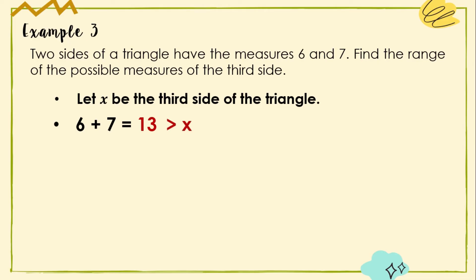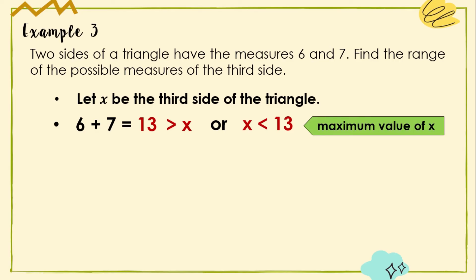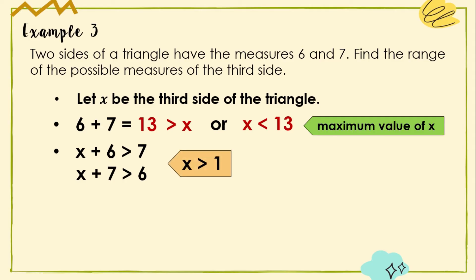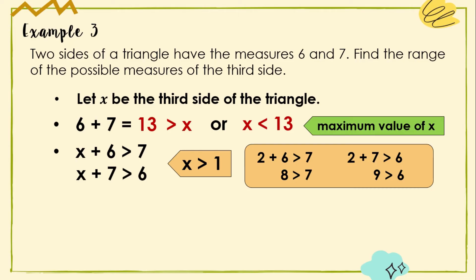Thus X is less than 13, giving us the maximum value of X. We can also form two other inequalities: X + 6 > 7 and X + 7 > 6. To satisfy both, X must be greater than 1. For instance, if X = 2, the first inequality becomes 8 > 7 (true) and the second becomes 9 > 6 (true). Any value of X greater than 1 satisfies both inequalities, giving us the minimum value of X.